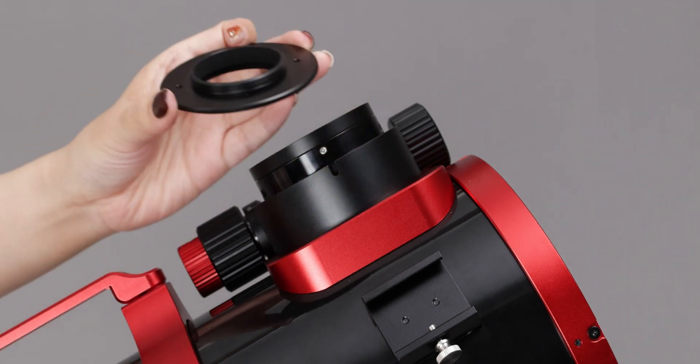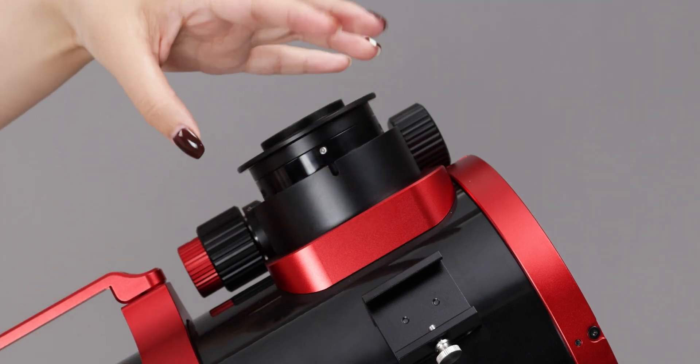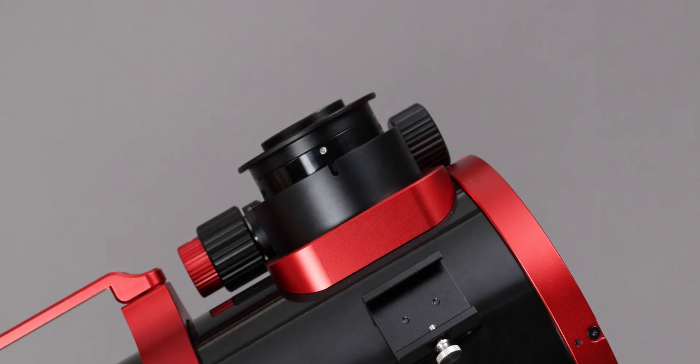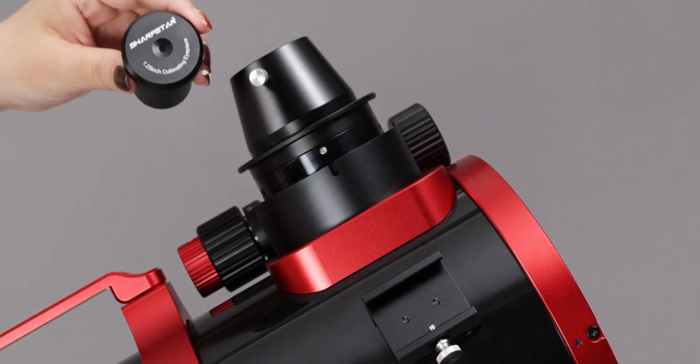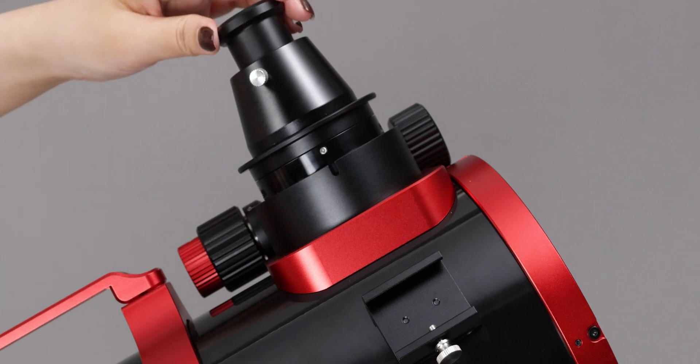Remove the M48 adapter from the corrector and screw it on the corrector locking ring. Then installation in the following order: M48 adapter, 1.25 adapter, collimating eyepiece.